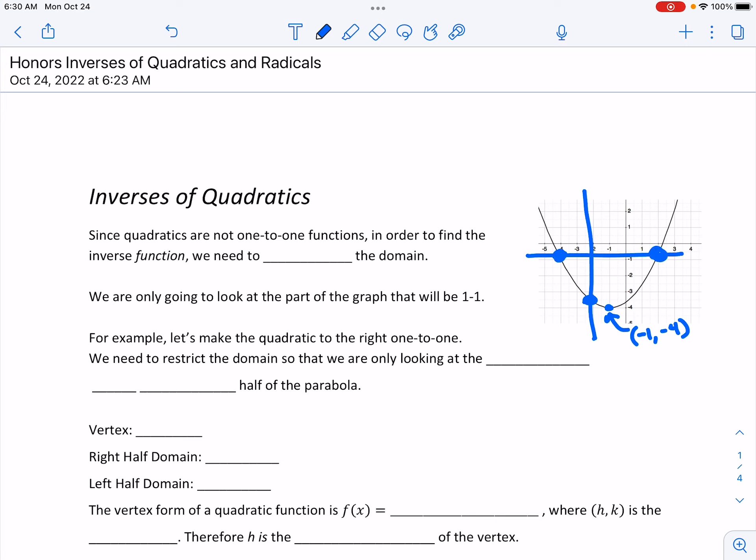Because of that reason we don't have a one-to-one function and we usually restrict the domain to the right-hand side of the graph or of the function from the vertex to the right. Traditionally we go to the right-hand side so we restrict the domain so that the part we're taking the inverse of passes the vertical and horizontal tests.